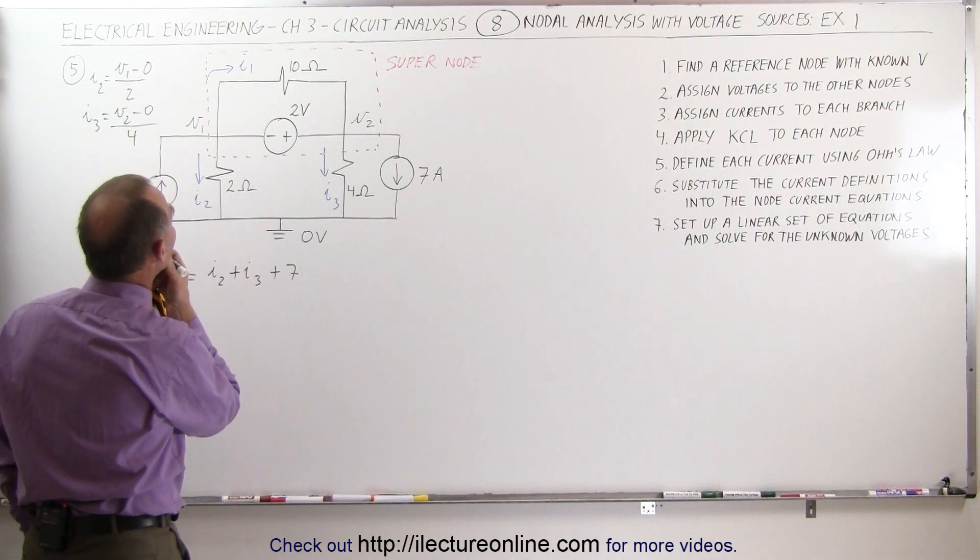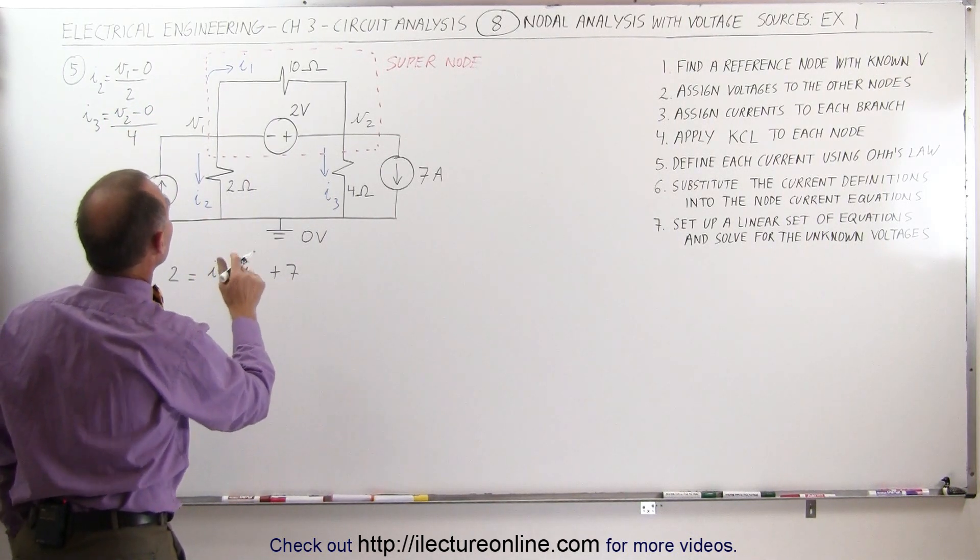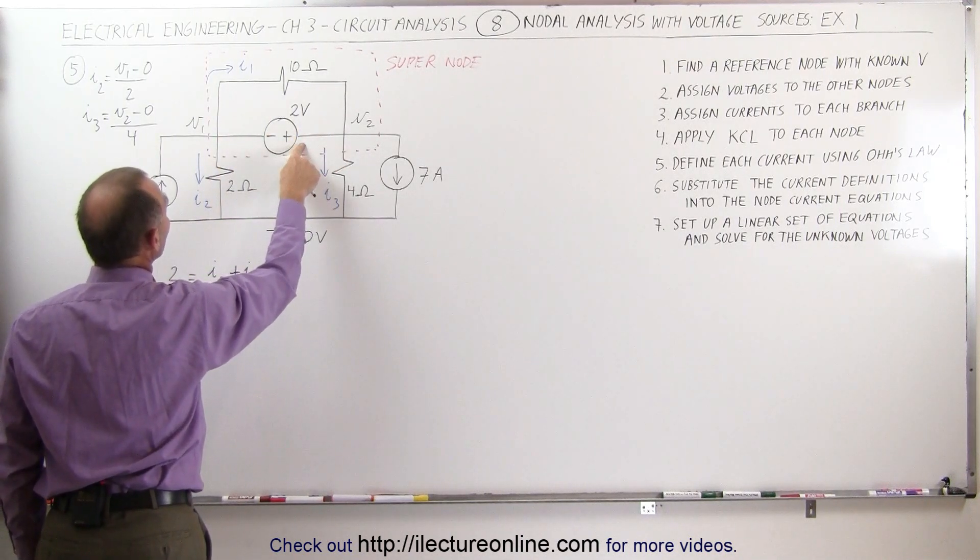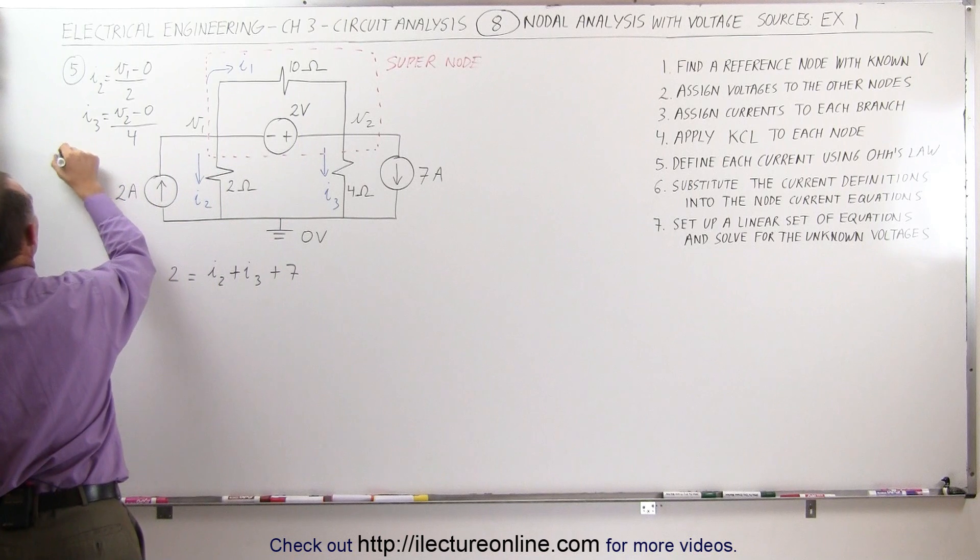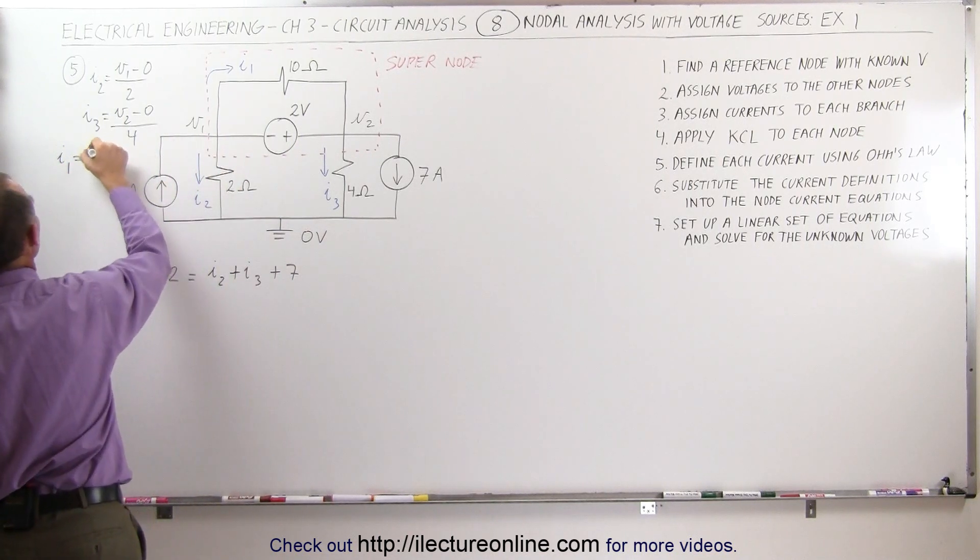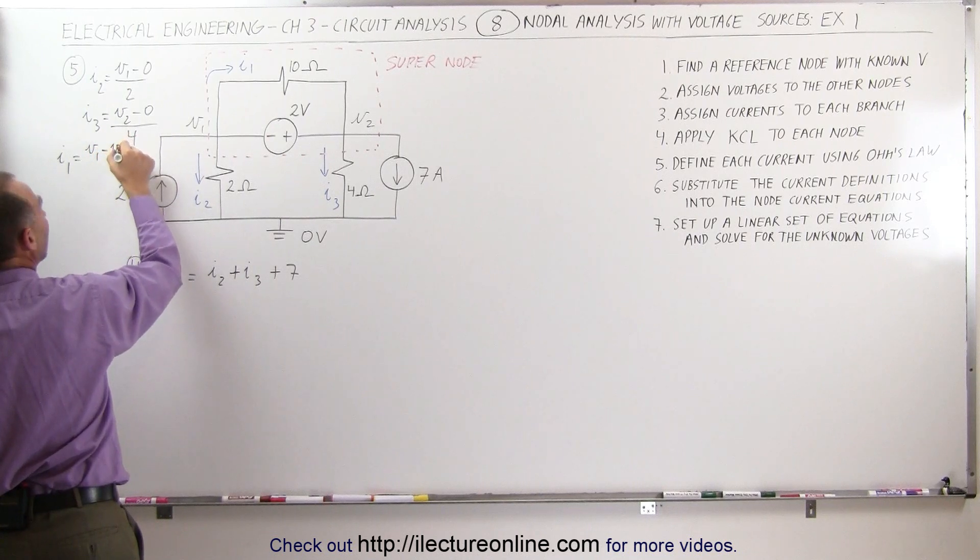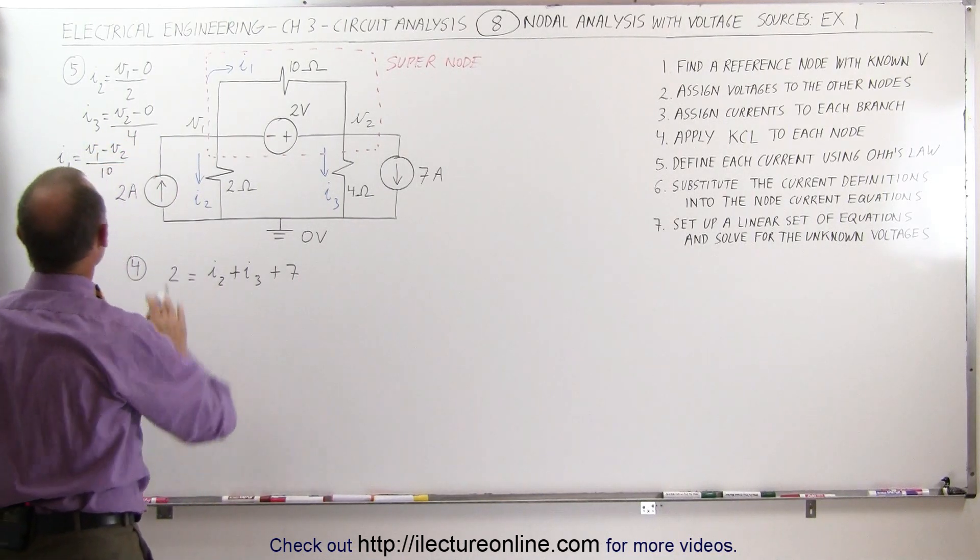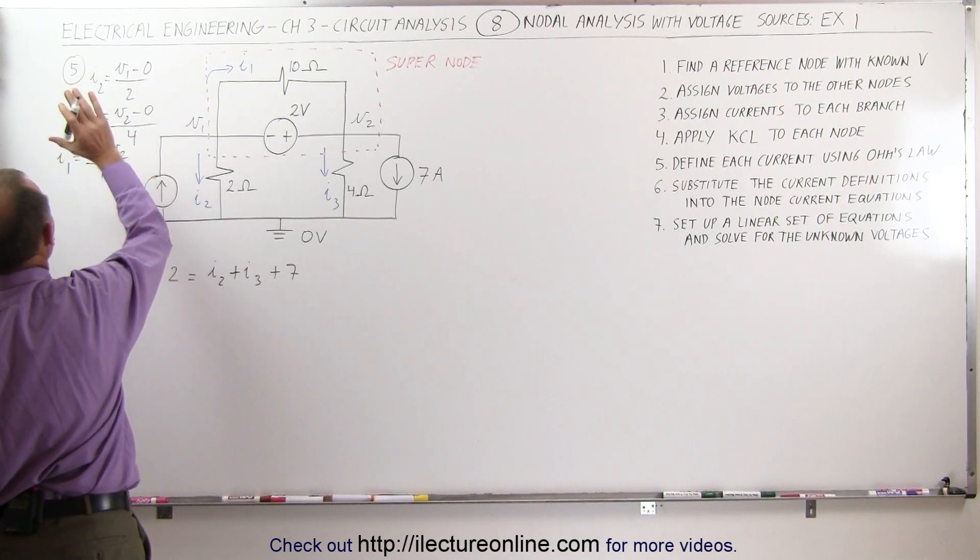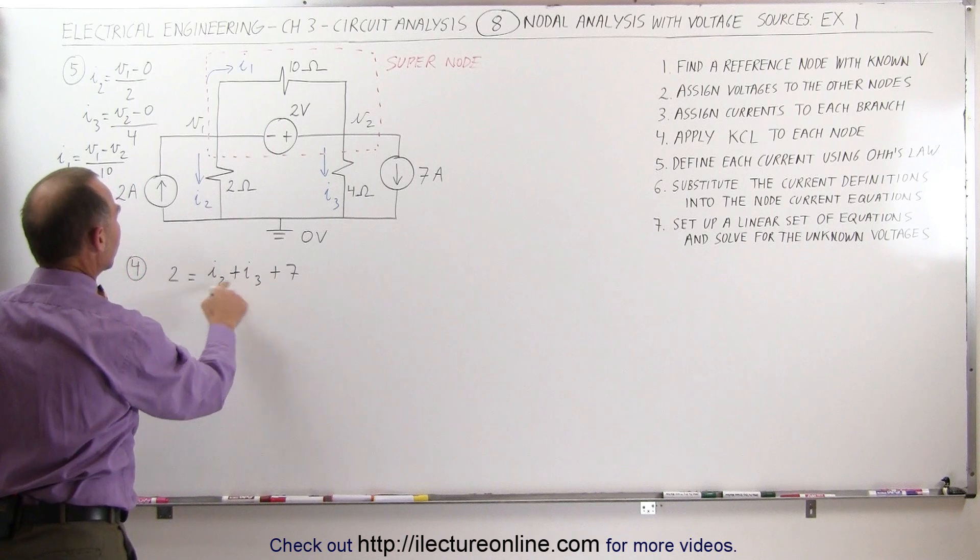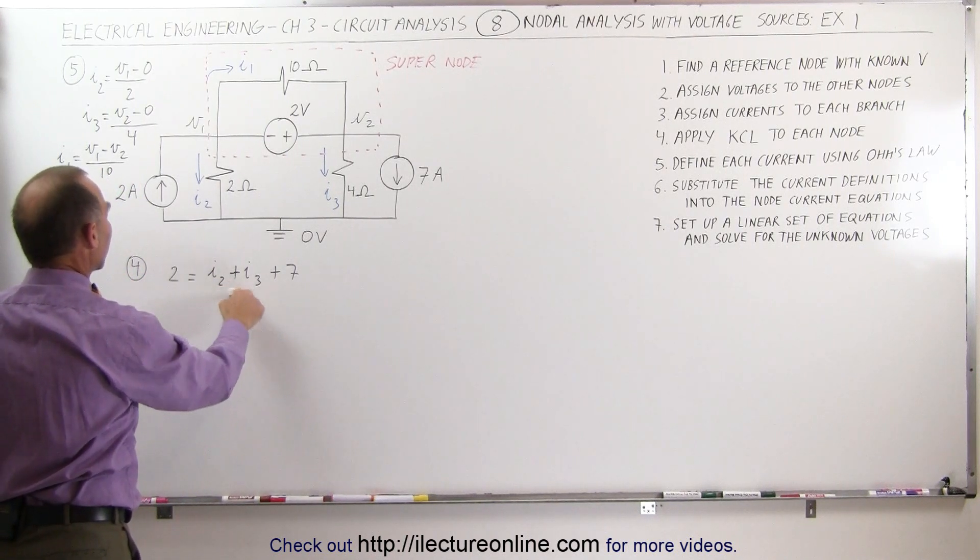And can I1 be defined? Yes, it can be defined because I know that the voltage from V1 to V2 must be 2 volts. Hence, I1 can be defined as V1 minus V2 divided by 10 ohms. I now have I1, I2, and I3 defined in terms of voltages. I can now go ahead and substitute these for I2 and I3.